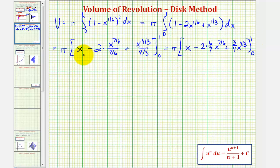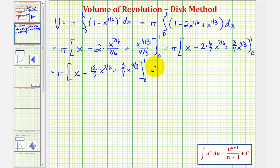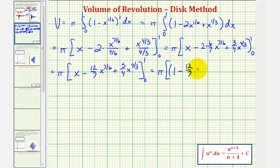So we have x minus twelve-sevenths x to the seven-sixths plus three-fourths x to the four-thirds. Now we'll substitute x equals one, then x equals zero, and find the difference. When x equals one: one to the seven-sixths is one, so we get one minus twelve-sevenths plus three-fourths. When x equals zero, all terms are zero.